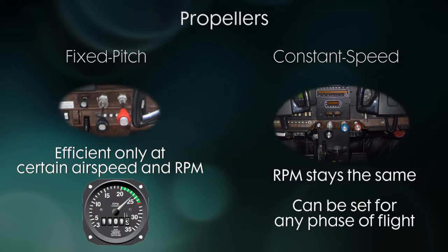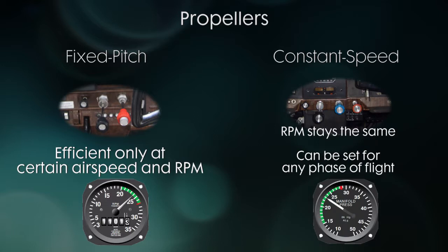In a constant speed propeller, the RPM is maintained the same and you can adjust the RPM to suit your needs, whether you're in a climb, cruise, or descent. The engine power will be shown by a manifold pressure gauge and not the RPM gauge since the RPM stays the same. The propeller RPM is adjusted using the blue prop that's in the cockpit.